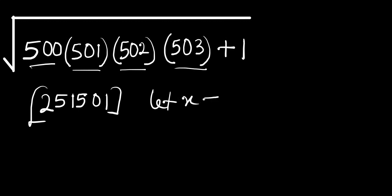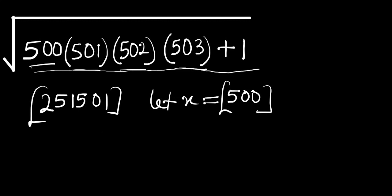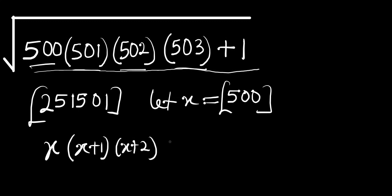What we are going to do is let x equal 500. You could also let x equal 501, in which case 500 would be x minus 1 and 502 would be x plus 1. But in my case I've decided to let x equal 500. So inside the square root we are going to have x times (x+1) times (x+2) times (x+3), plus 1.